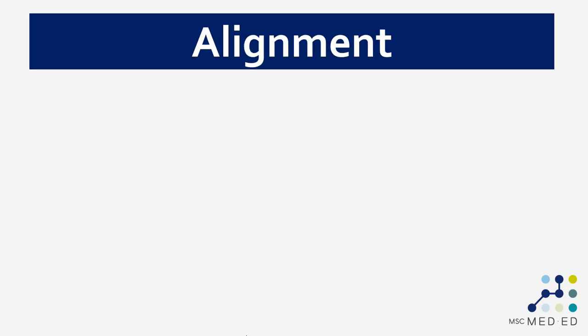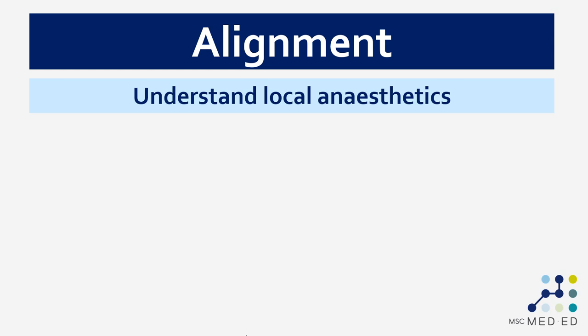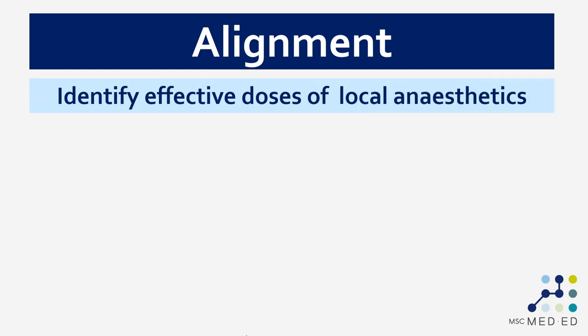The principle is to align three things: the teaching, the outcome, and the assessment. Let's take a learning outcome: we want people to understand local anesthetics. Hopefully by now you realize this is not a good learning outcome, because it's very difficult to understand what somebody else understands — 'to understand something' is not really a measurable action verb. These two verbs, 'to know' and 'to understand,' are really where the whole idea of learning outcomes came from back in the 1950s — frustration with terms that are not very specific and not very measurable. Let's change it into something more specific and measurable: 'to identify effective doses of local anesthetics.' This is something we can observe, and this makes it a better learning outcome.